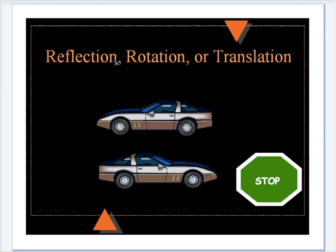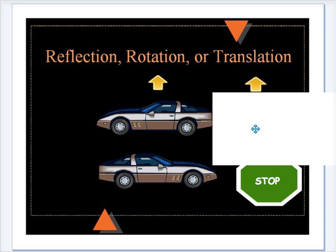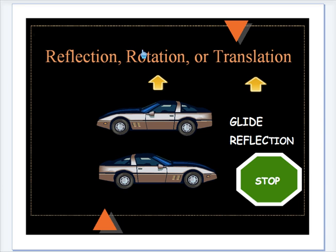And then finally, just doing process of elimination, this one is a rotation. It's also been translated, since it's been moved from here down to there. And that's called a glide reflection, something that we'll look at as we go ahead.